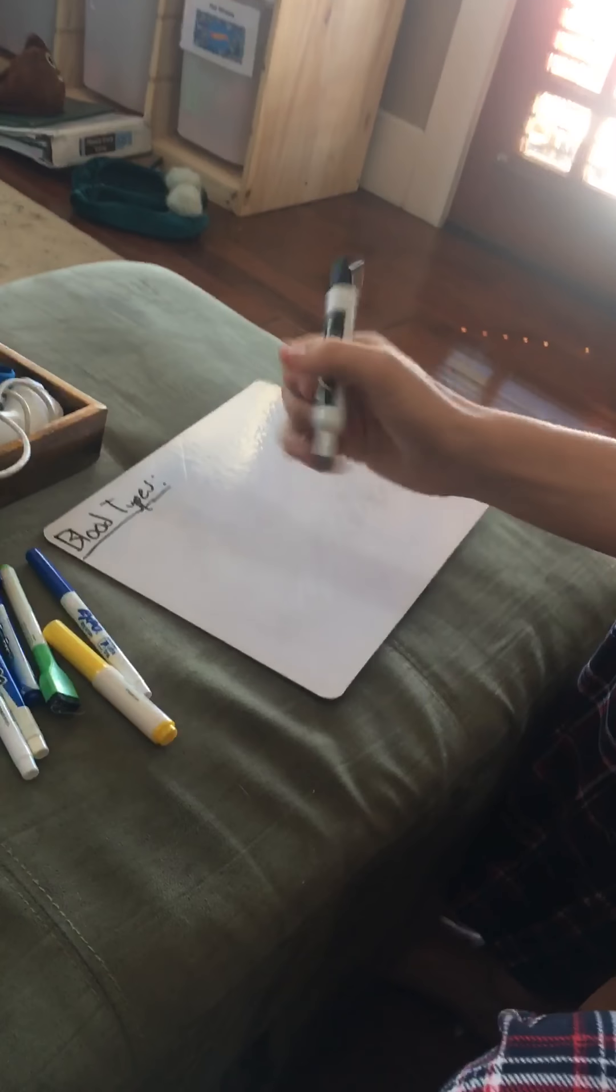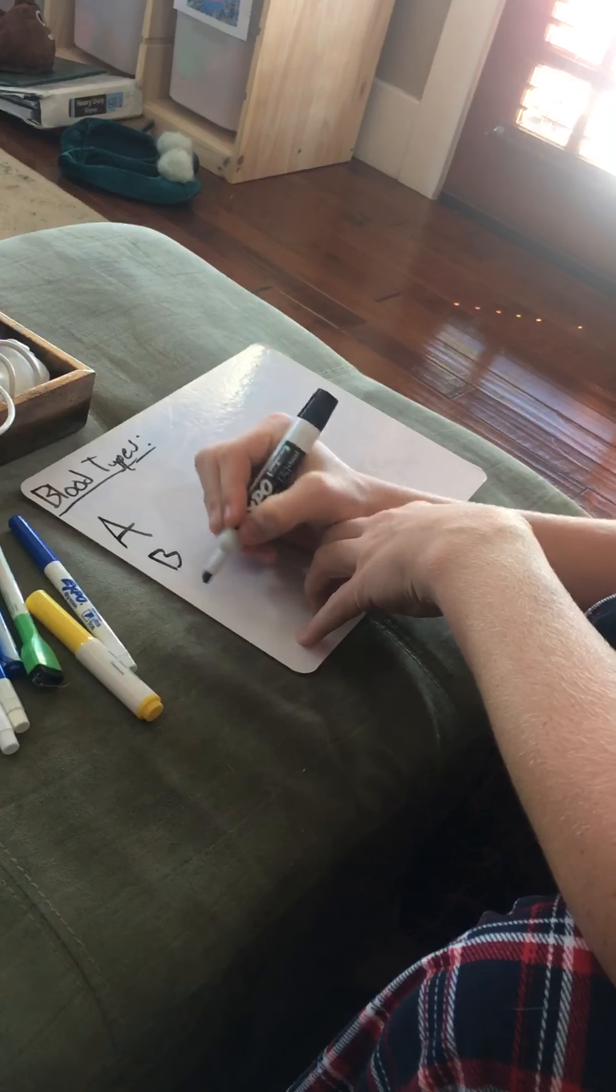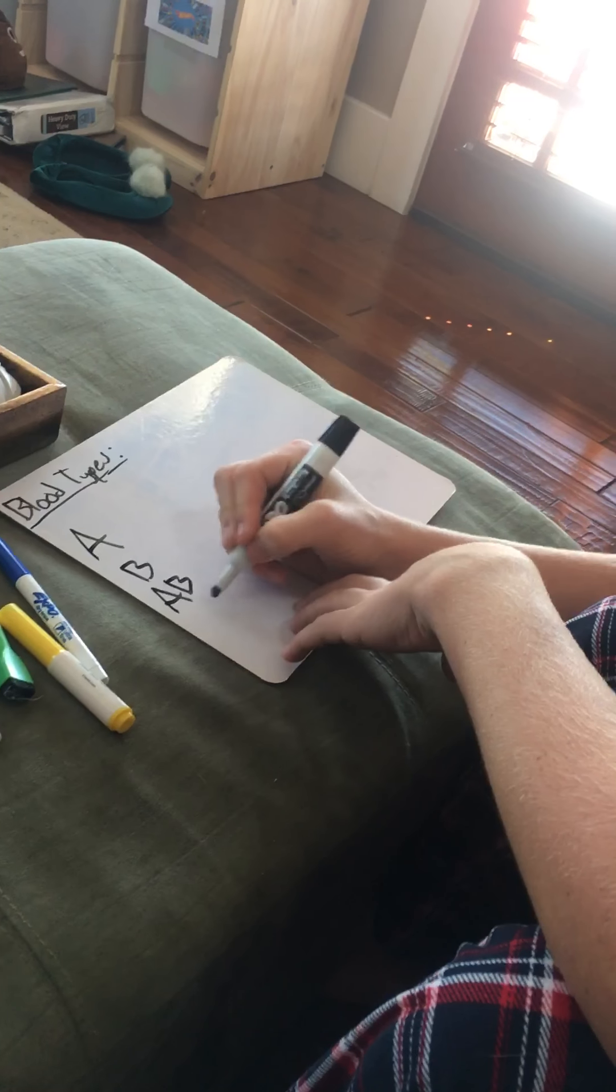Go ahead Zach. So I'm going to explain each blood type in our family tree. Zach's studying genetics and biology right now. So basically there's four main blood types. There's A, there's B, there's AB, and then there's O.